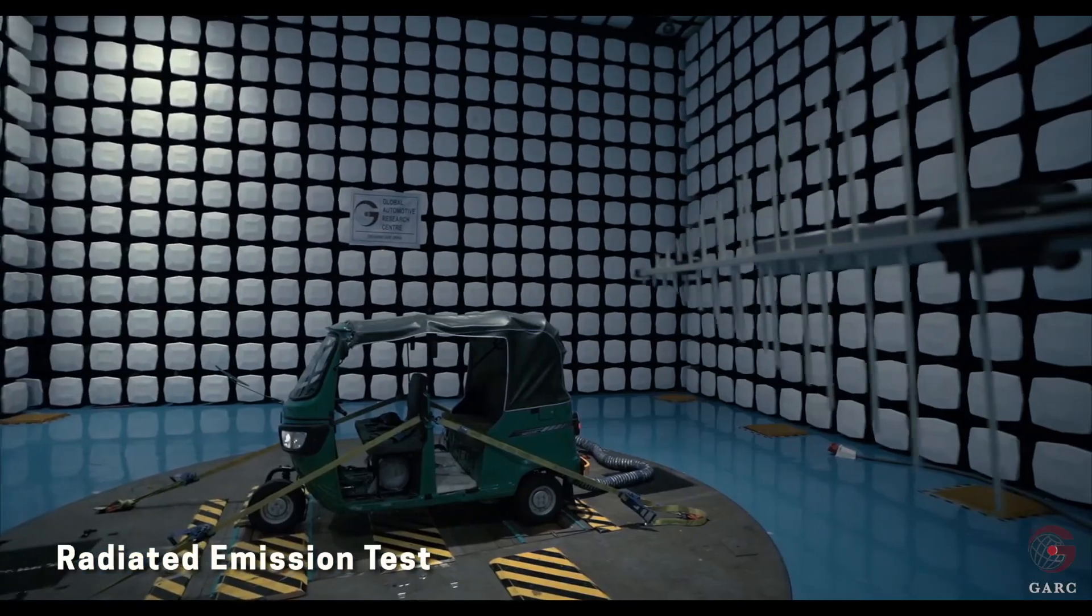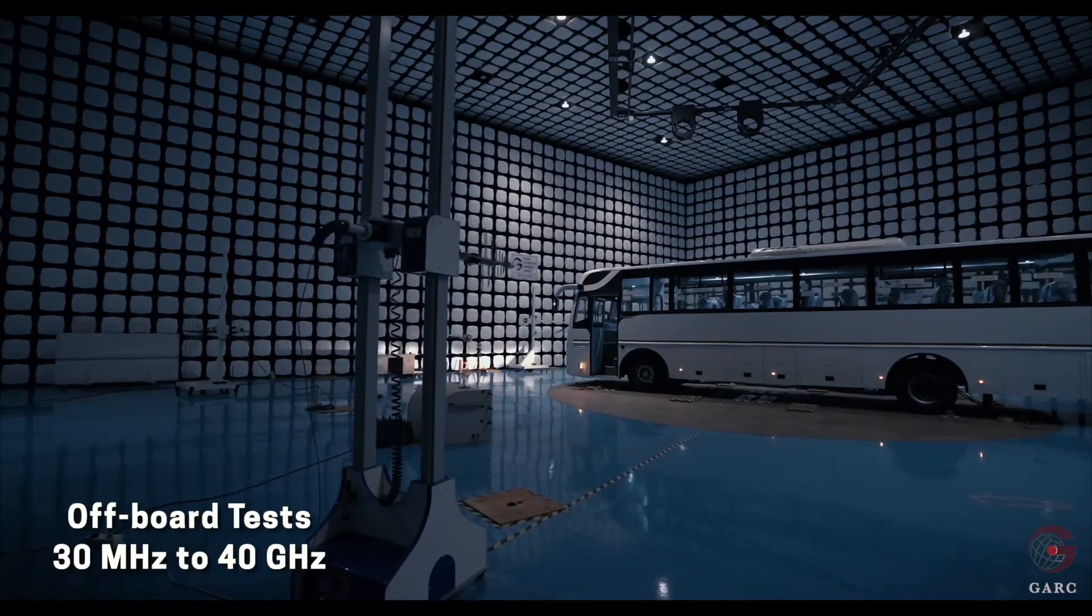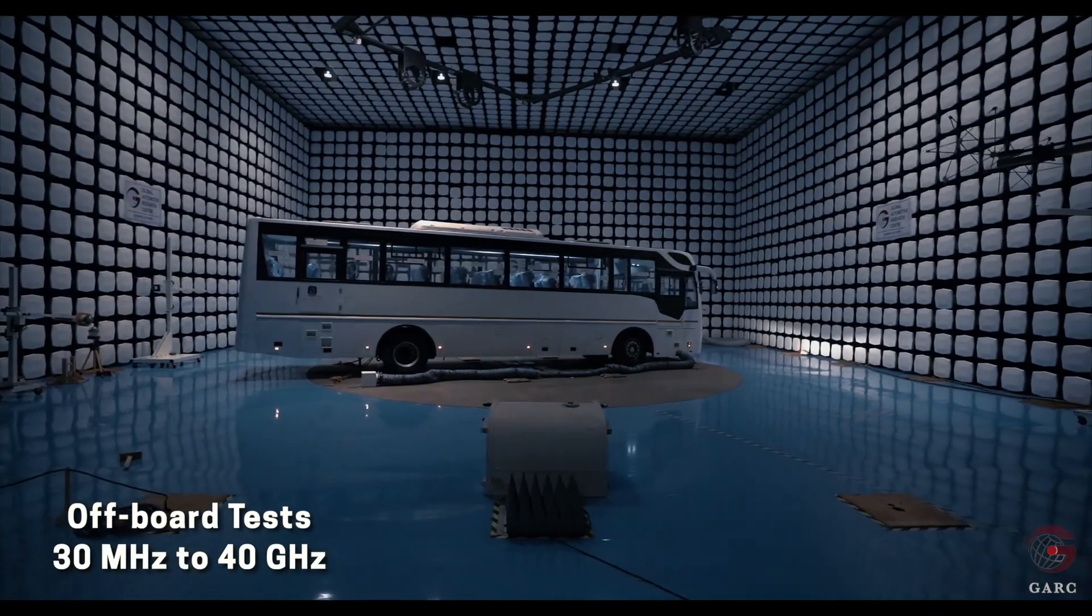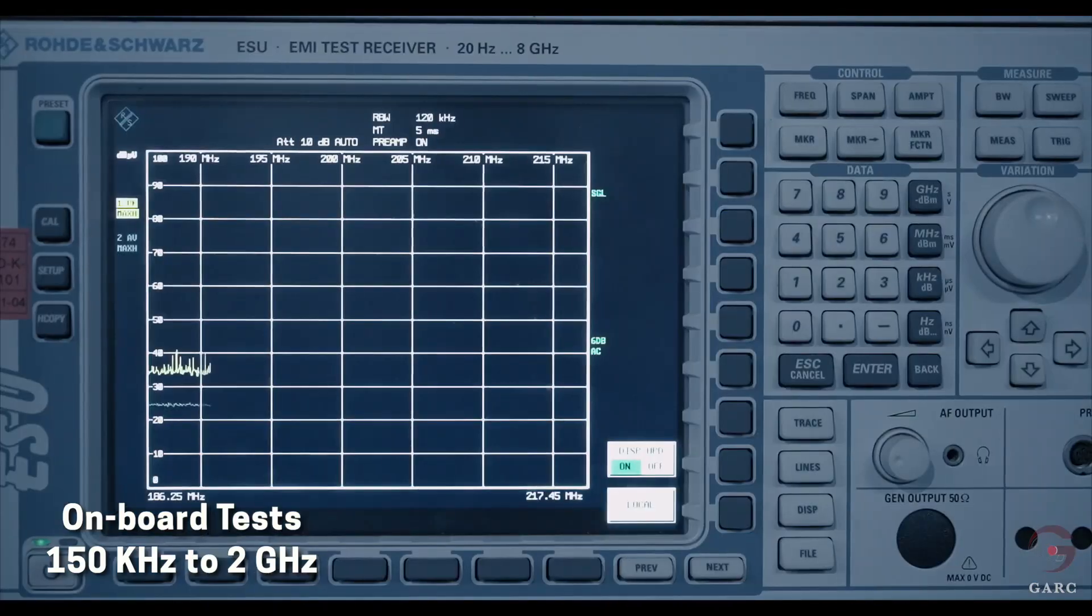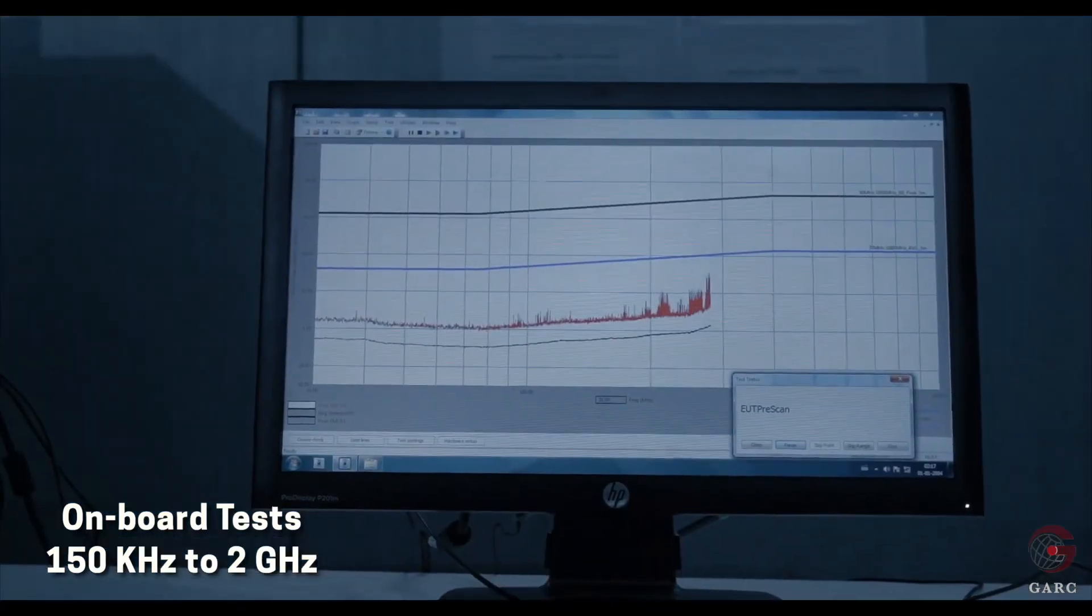Radiated emission for vehicle level tests can be measured from 30 megahertz to 40 gigahertz for off-board tests and from 150 kilohertz to 2 gigahertz for onboard tests.